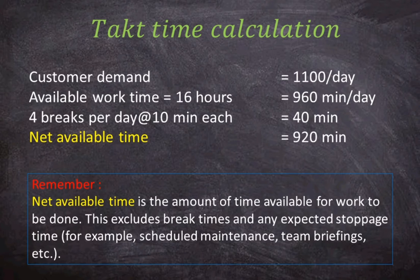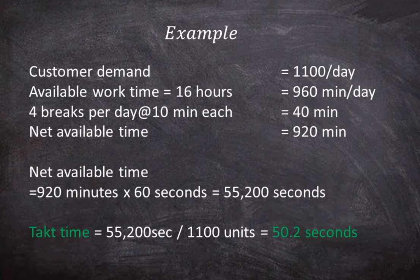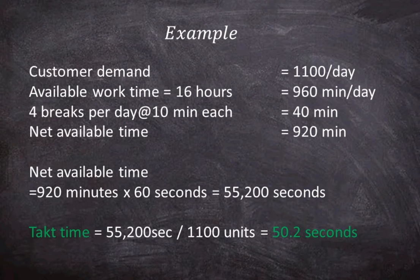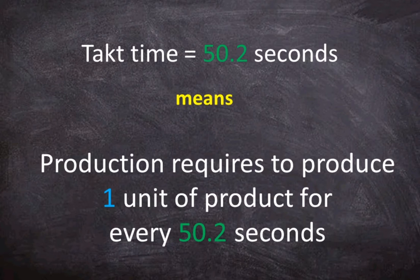Remember that net available time is the amount of time available for work to be done. This excludes break times and any expected stoppage time — for example, scheduled maintenance, team briefings, and other. Next, convert the net available time into seconds, giving us 55,200 seconds of net available time. The tack time is 55,200 seconds divided by 1,100 units, and the tack time is 50.2 seconds.